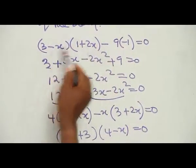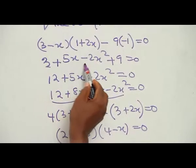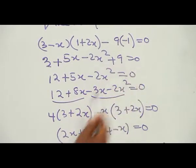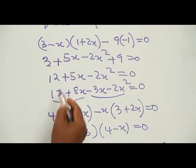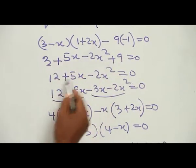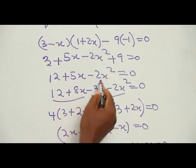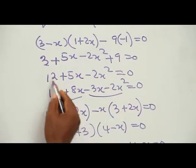If you open up this bracket, you will have 3 + 5s - 2s² + 9 = 0. You can now simplify this order: 3 + 9 is 12 + 5s - 2s² = 0. You can factorize it.